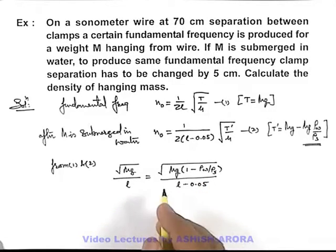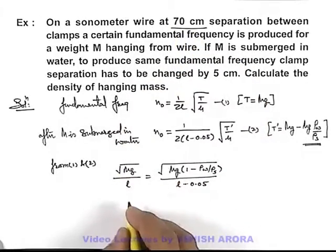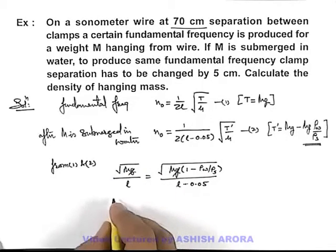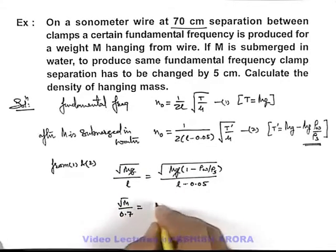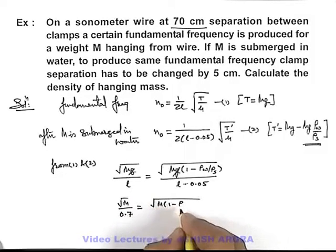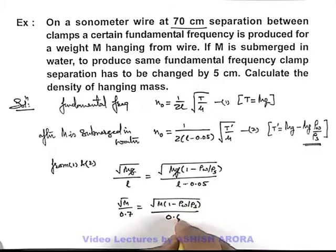If we substitute the value of l which is 70 centimeters, g can be cancelled out. This will give us √(m/0.7) = √(m(1 - ρ_water/ρ_solid)/0.65).